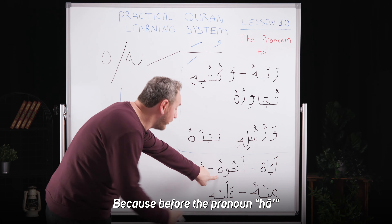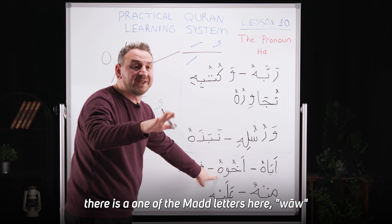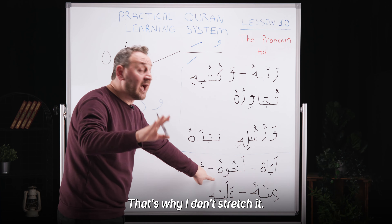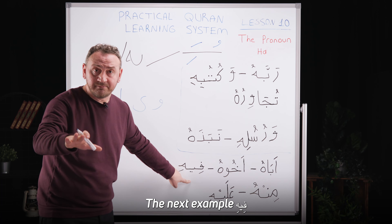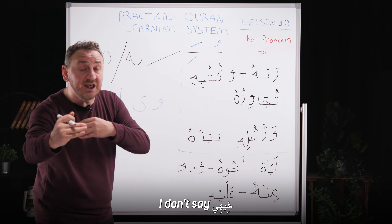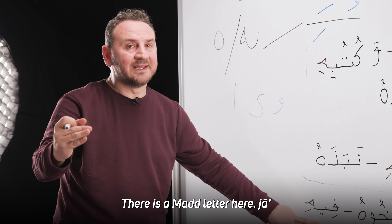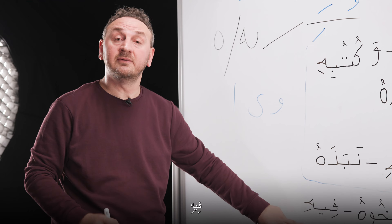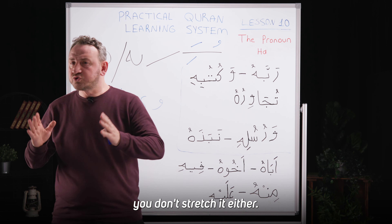Next example — I don't stretch it. Why? Because before the pronoun Ha there is one of the mad letters, a waw. That's why I don't stretch it. Next example: Fihi. I don't say fihi with a stretch. Why? Because before the pronoun Ha there is a mad letter — ya. So: Fihi.